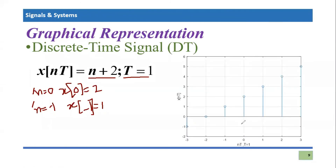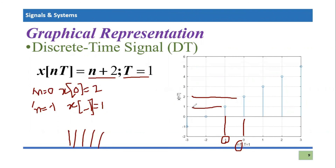The graph looks like this. The time domain is a combination of NT. Sample zero has value two — that is verified on the graph. At N equals minus one, the value is one, which is also visible. The most important thing to notice is the sample space — the space between two samples. This is one in time domain and this is two in time domain, so the sample space is one. If the time spacing is less than one, the signal will be compressed; if you increase it, the signal will be expanded, which we will observe in the next example.